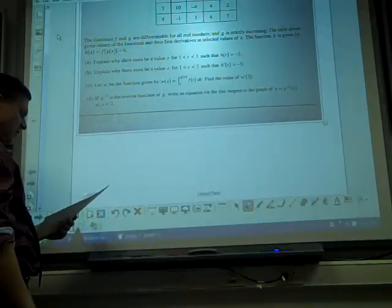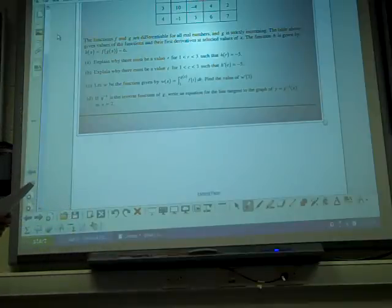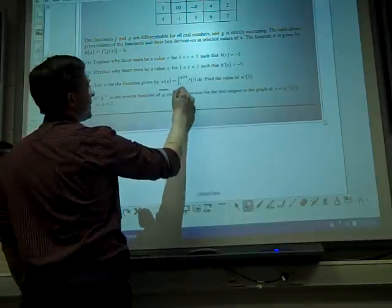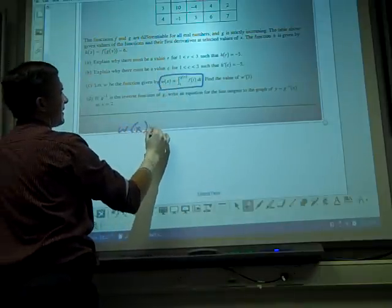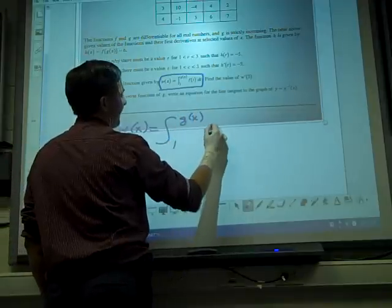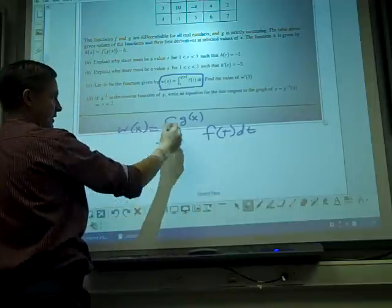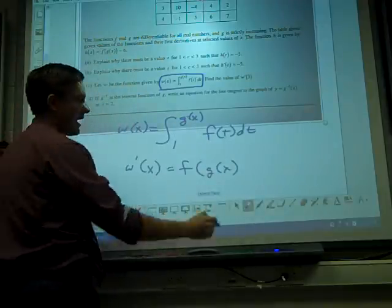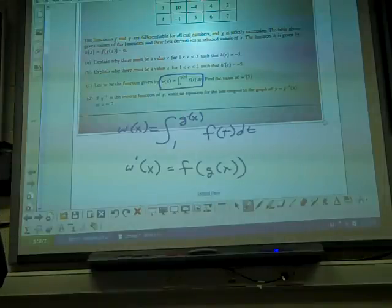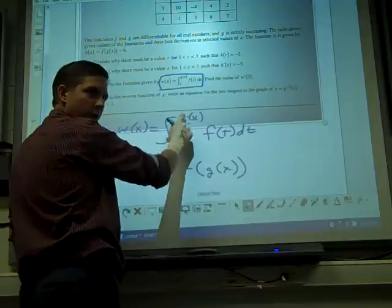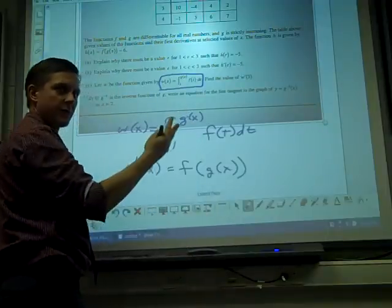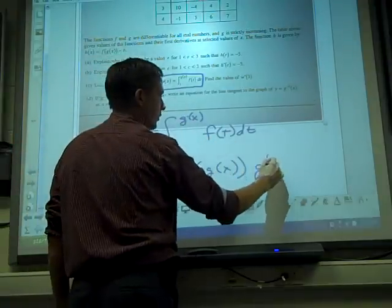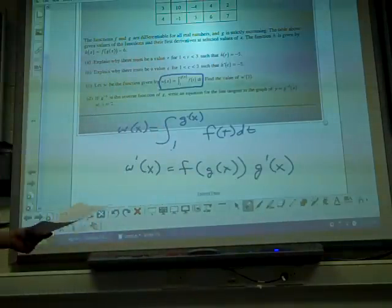Letter C. Let w be the function given by w of x equals the integral from 1 to g of x of f of t dt. Find the value of w prime of 3. This, guys, is FTC. So the first thing we've got to do is take the derivative of w of x. Which is just f of g of x times g prime of x. You just bring the top of the integral into the function. Because you're integrating this from one to a variable. So when you take the derivative of an anti-derivative, what do you end up with? The thing you started with. But you also have to do the chain rule. So that's the derivative.